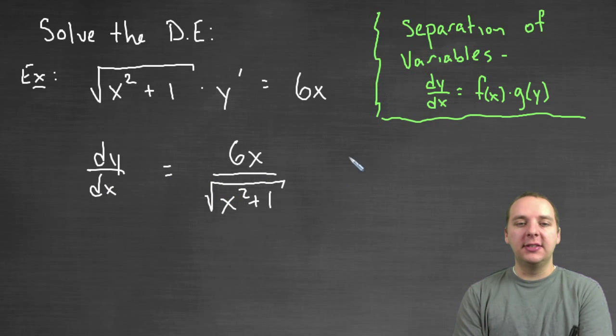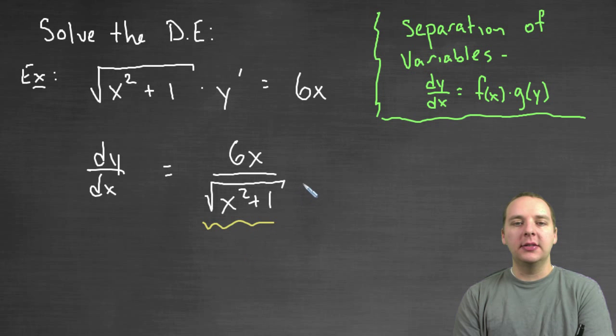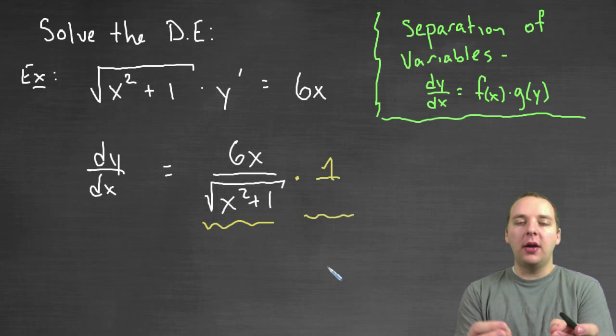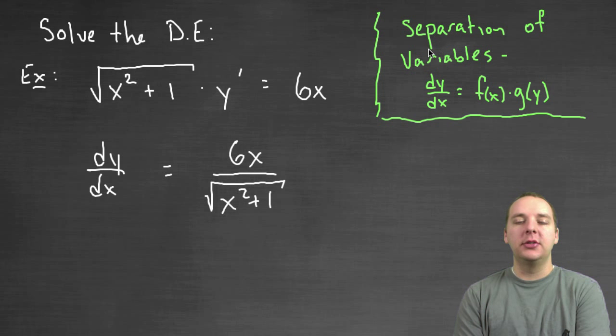I'll write this as dy dx. You could leave it y prime I suppose, but I think for the upcoming steps it would be better to see it as dy dx. And we would have 6x divided by the square root of x squared plus one. By the way, I've shown that it's separable right here. This is a function of x times, and there's an understood one, which is a function of y. So there's that product that's created there. It is separable, but let's go a step beyond that. Now that we've shown it's separable, how do we actually do separation of variables?